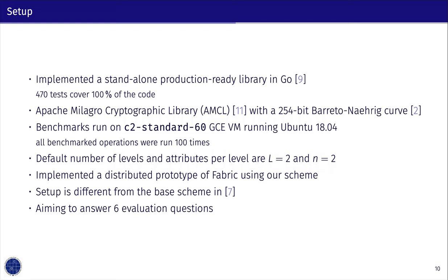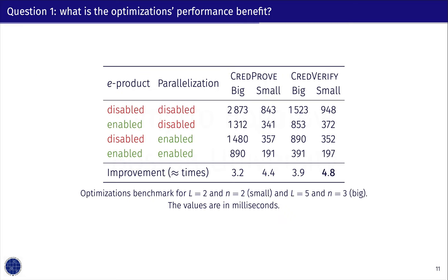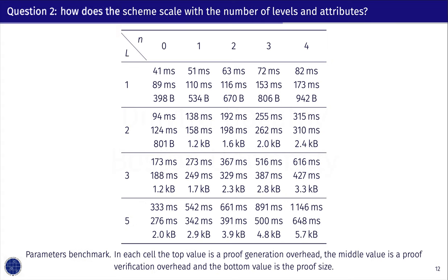We structure our experiments to answer six questions. First, what is the optimization's performance benefit? We toggled our optimizations — parallelization and smart computation of pairing products — and conclude that our optimizations offer almost a five-fold improvement in running time. Second, how does the scheme scale with the number of levels and attributes? We generate credentials for different numbers of levels and attributes, record the time to present a proof, to validate it, and the size of the proof object. We observe that the relation is linear in both the number of levels and attributes per level.